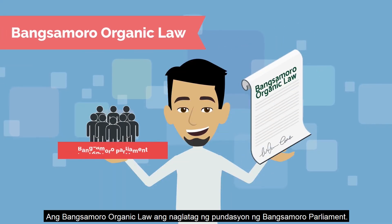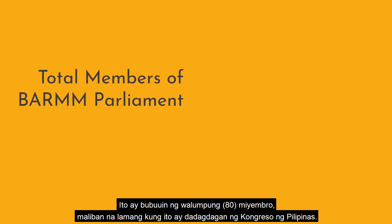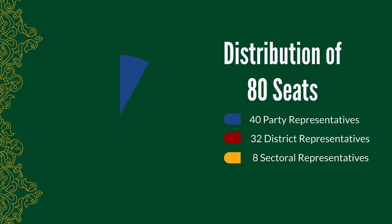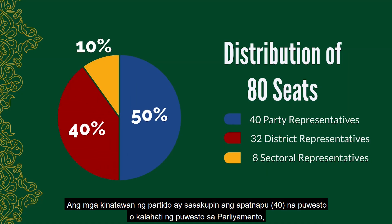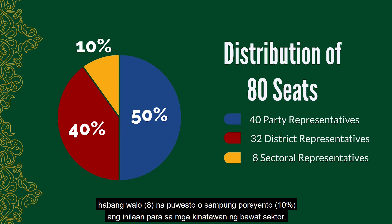The Bangsa Moro Organic Law laid the foundations of the Bangsa Moro Parliament. It shall be composed of 80 members unless otherwise increased by the Philippine Congress. Party representatives will occupy 40 seats or half of the available seats in Parliament. District representatives will occupy 32 seats representing 40 percent, while 8 seats or 10 percent are allotted for sectoral representatives.